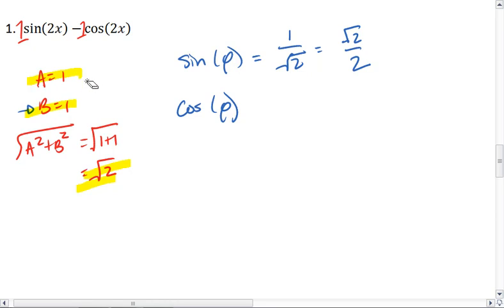And you know what? b is actually negative 1. That's completely my fault. So sine of phi is actually negative 1 over root 2, which is negative root 2 over 2. Cosine of phi is positive 1 over root 2, which is root 2 over 2.